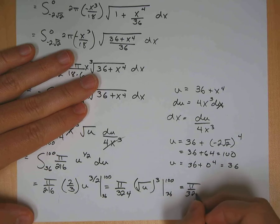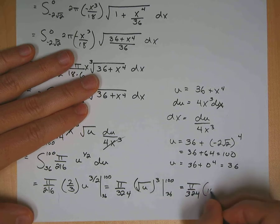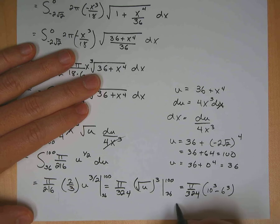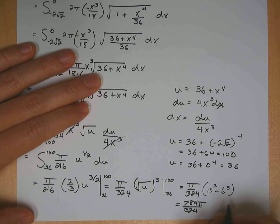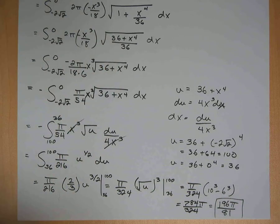Pi over 324. The square root of 100 is 10, so it's going to be 10 cubed. Now the square root of 36 is 6, so that's minus 6 cubed. Okay. And if you put those together, that's 784 on the inside there. So you get 784 pi over 324. Okay. And if you reduce that, you get 196 pi over 81. And that's your surface area.